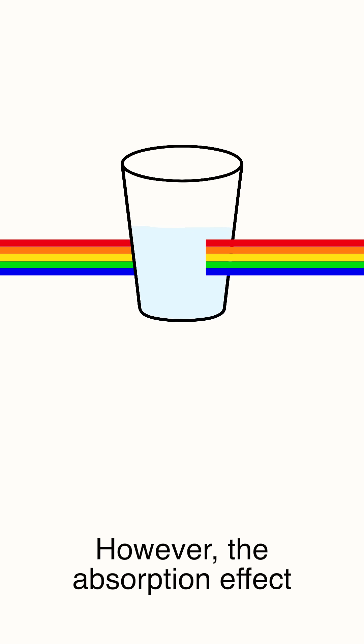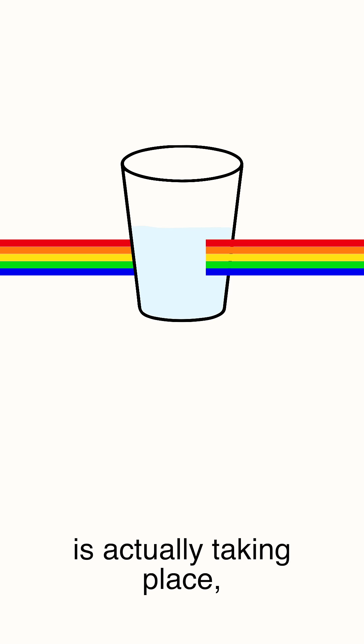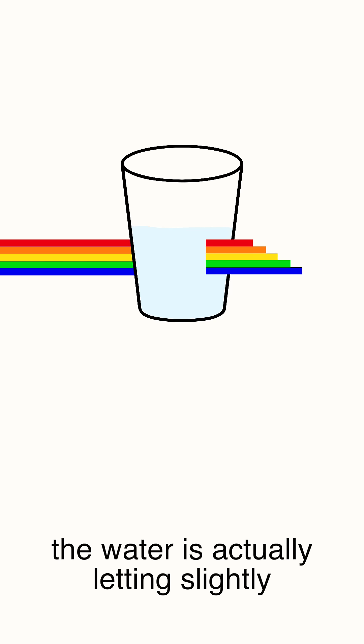The light goes in one end and comes straight out the other. However, the absorption effect is actually taking place. The water is actually letting slightly more blue through than red, but there's just not enough water for us to notice.